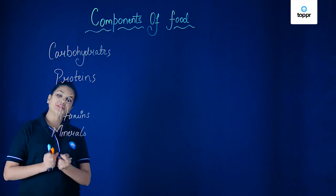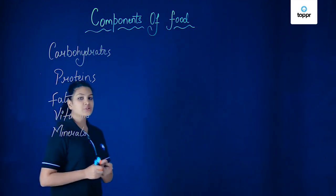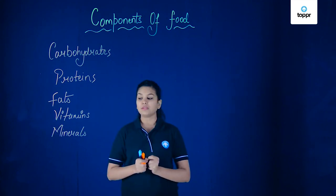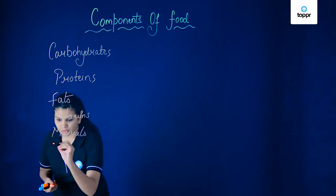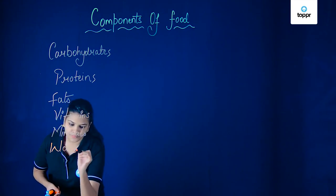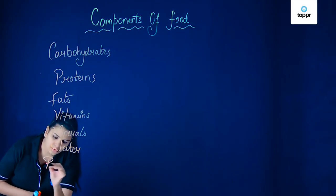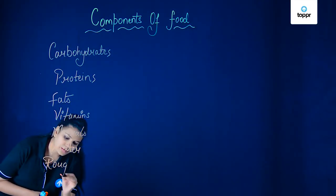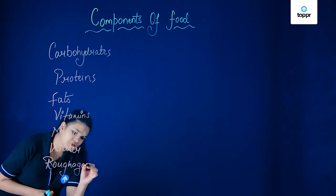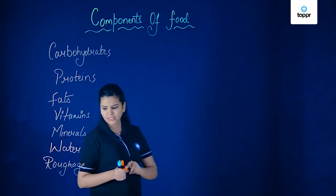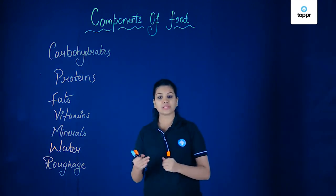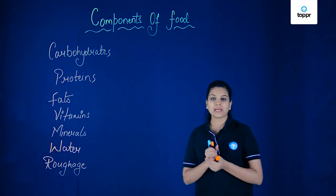Now, except for these, there are two more things which are required to have a balanced diet. These are water and the last one is called roughage. Roughage are nothing but fiber-like substances present in our food which help us in digestion.